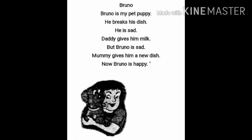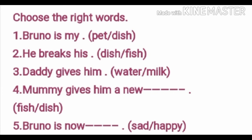Next is the Bruno poem: Bruno is my pet puppy. He breaks his dish. He is sad. Daddy gives him milk but Bruno is still sad. Mommy gives him a new dish. Now Bruno is happy. Choose the right words and fill in the blanks: Bruno is my ___ (pet), he breaks his ___ (dish), daddy gives him ___ (milk), mommy gives him a new ___ (dish), Bruno is now ___ (happy). Children, do these exercises in your book or notebook. Till then, goodbye!